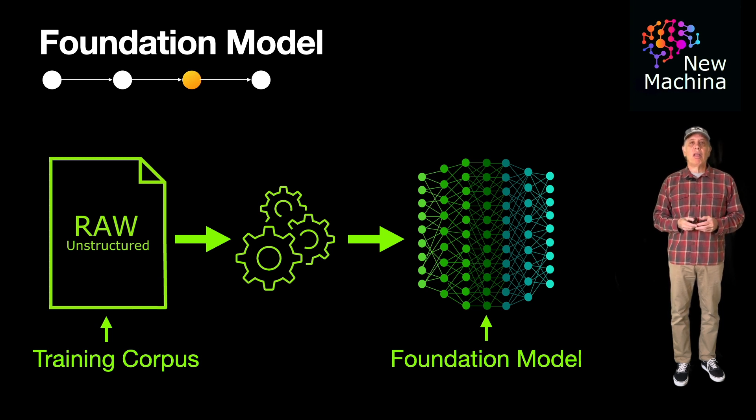In summary, the model training corpus is the body of data used for training the model. Foundation models are trained on vast amounts of internet scale data, while traditional ML models are trained on smaller amounts of use case specific data.